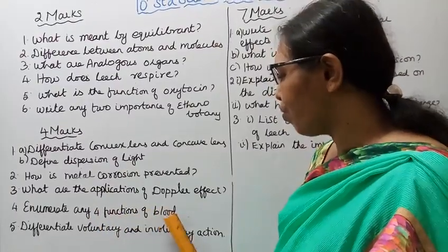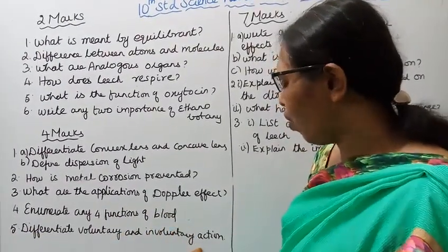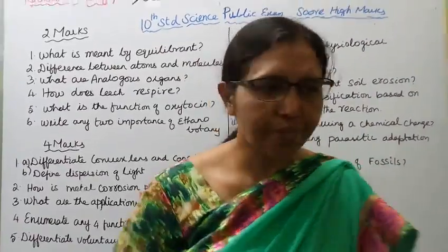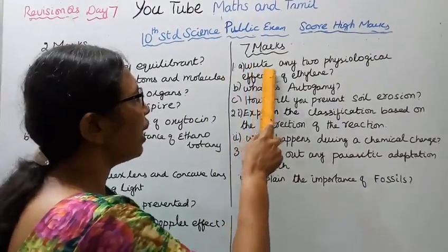Fifth, differentiate voluntary and involuntary action. Okay, seven marks: First A, B, C...